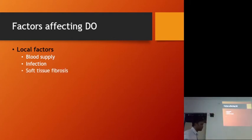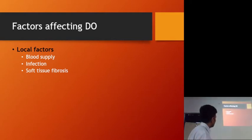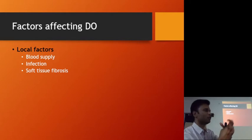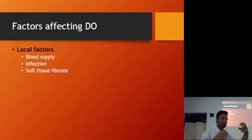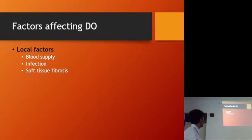Then we have soft tissue fibrosis. If the patient has undergone multiple surgeries, there may be fibrosis of the soft tissue overlying the bone. This fibrosis will hamper the movement of the bony segment that we have created — that is another factor to consider.